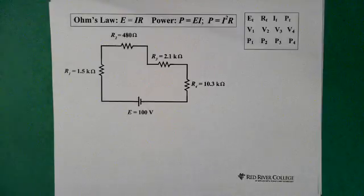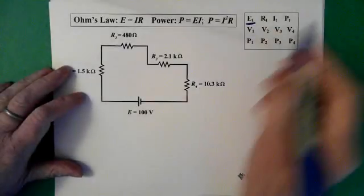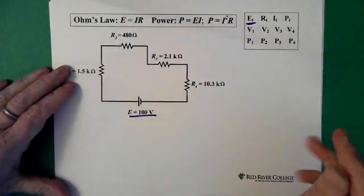Let's just walk through this thing. We can see that there's four resistors. We have a total voltage of 100 volts.